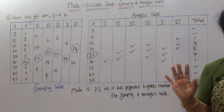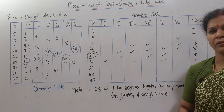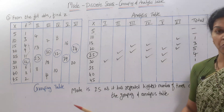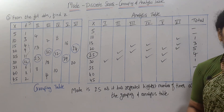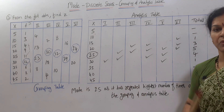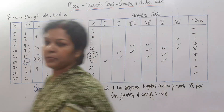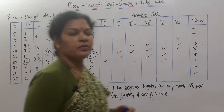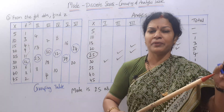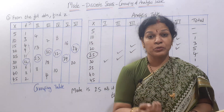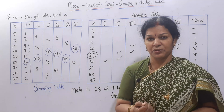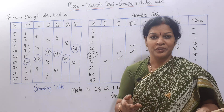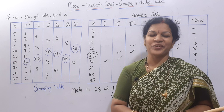This grouping and analysis table method is not only useful for discrete series — it is useful for continuous series also. I am showing you this problem once; the next two problems I'll show directly and you have to work out. Take a screenshot or note it down. I'm explaining very slowly so that below-average students can also follow without any doubt. If you feel I'm teaching too slowly, please increase the speed to 1.75x as per your wish.